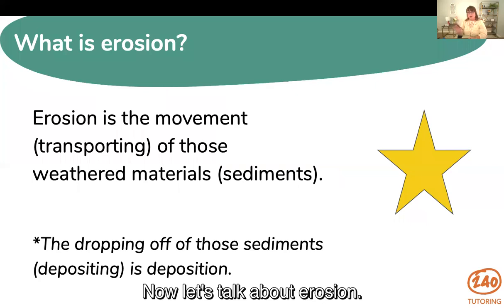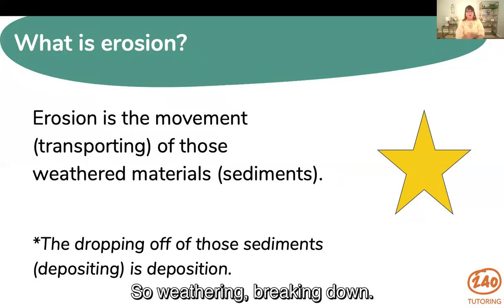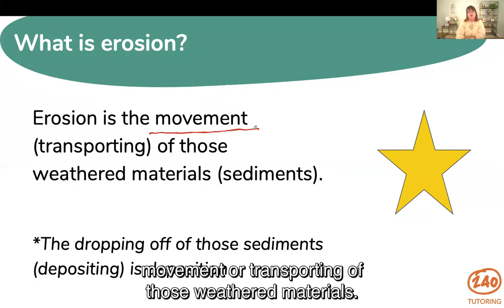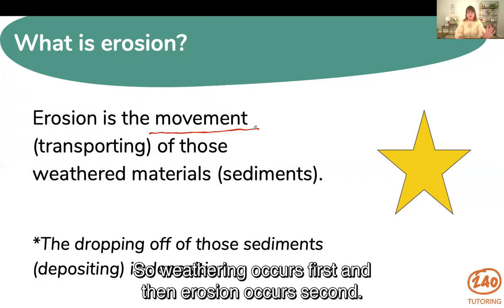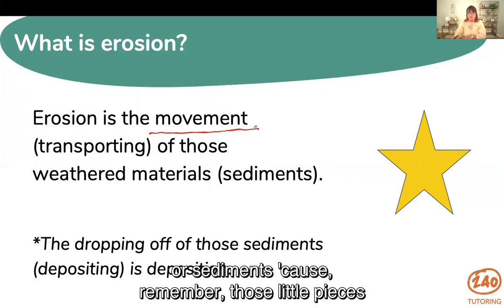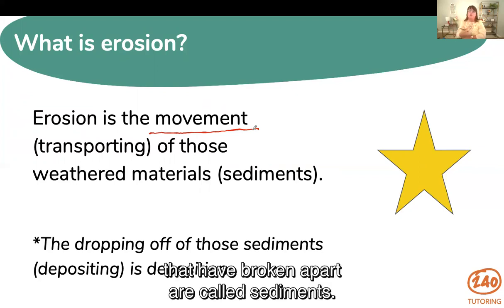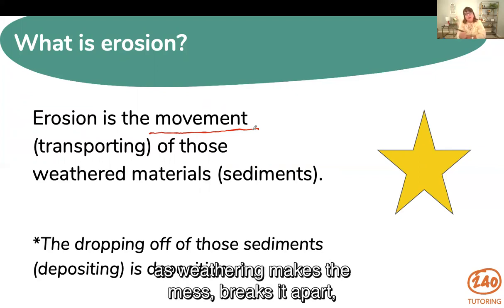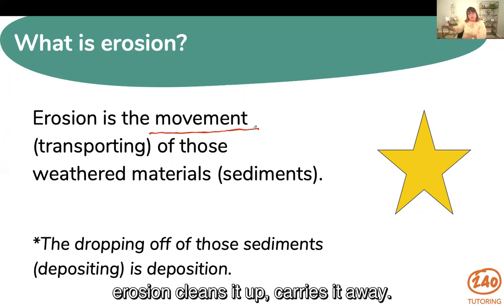Now let's talk about erosion. Weathering is the breaking down. Erosion is going to be the movement — that's your key word — the movement or transporting of those weathered materials. So weathering occurs first and then erosion occurs second. It's the movement of those weathered materials or sediments. I like to think of it as: weathering makes the mess, breaks it apart; erosion cleans it up, carries it away.